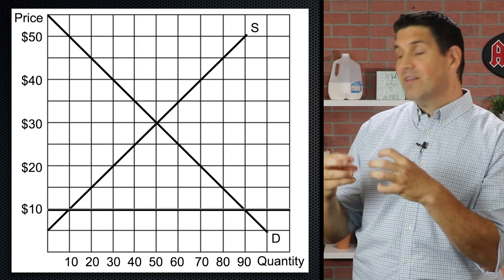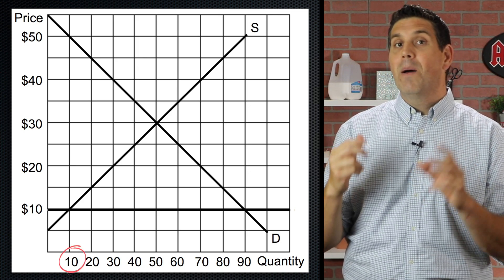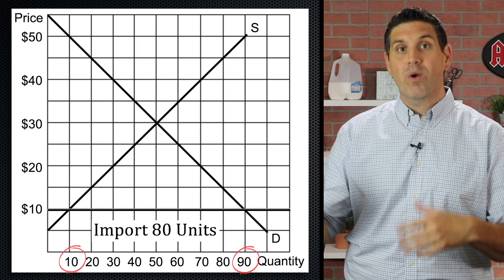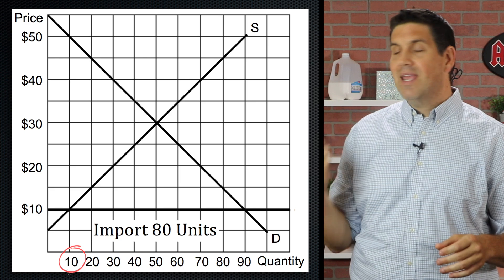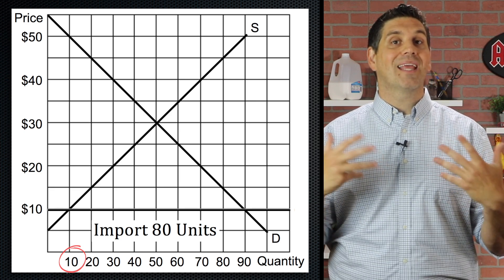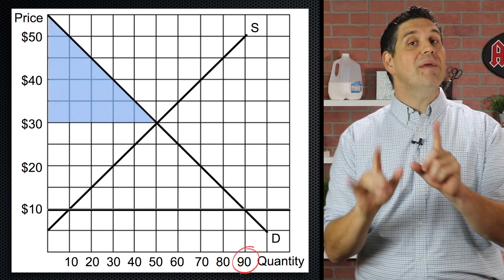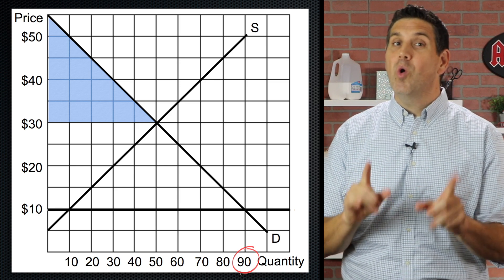At the price of $10, domestic producers can produce 10 units, but people want 90 units. So we're going to import those 80 units. So again, the amount we're going to produce in our own country is here. The amount consumers are actually going to get is here. So that means consumer surplus is going to be a whole lot bigger.